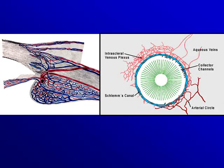Ciliary injection is due to dilatation of vessels inside the sclera. The cornea, sclera, ciliary body, and iris have some vessels penetrating to reach the inside, and dilatation of these vessels results in ciliary injection. As these vessels are not on the surface, we don't see individual vessels, and because there is some tissue covering them, the color appears light pinkish.